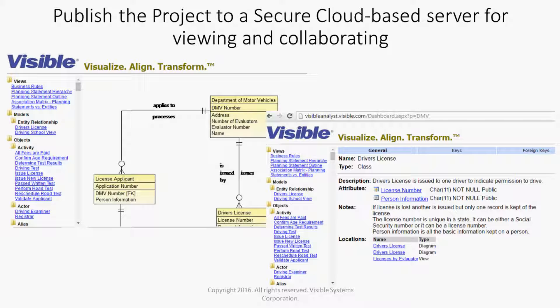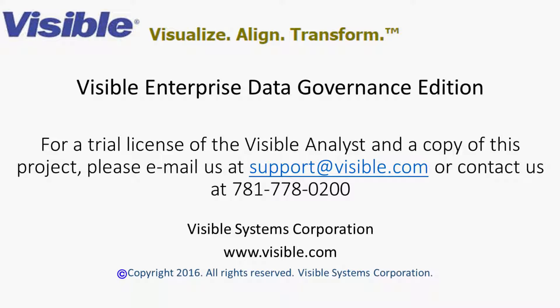You can publish the project to a secure cloud-based server for viewing and collaboration. The Visible Analyst Enterprise Data Governance Edition is available for a trial license by contacting us at support@visible.com or call 781-778-0200. Additional information is found on our website at www.visible.com. Thank you.